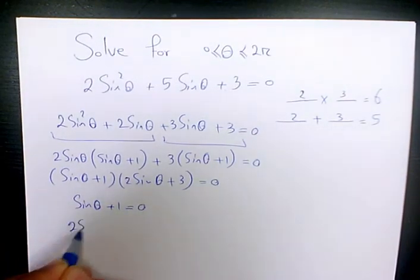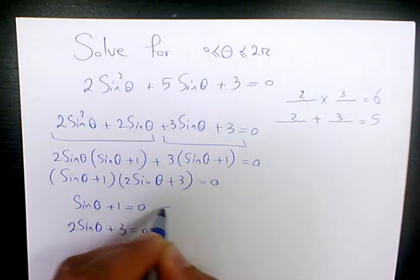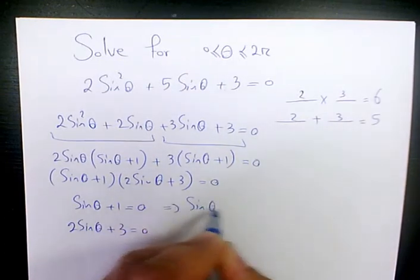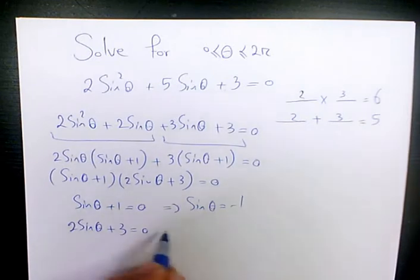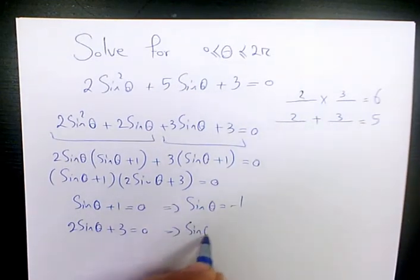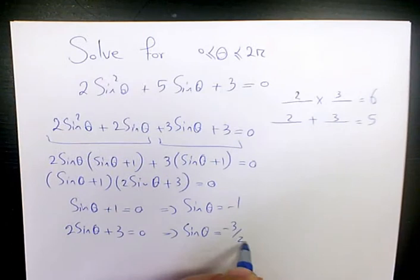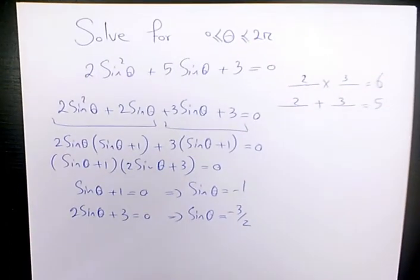Then I have sine theta plus 1 equals zero, or 2 sine theta plus 3 equals zero. So it's going to be sine theta equals negative 1, and the other answer is going to be sine theta equals negative 3 over 2.